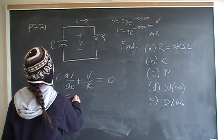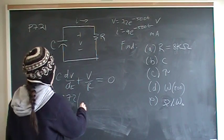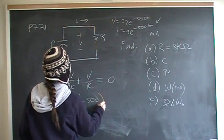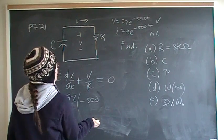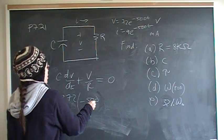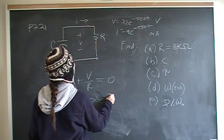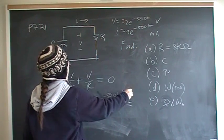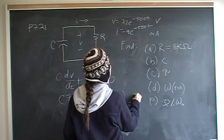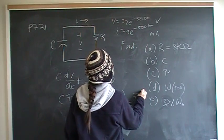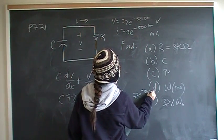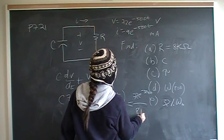dV/dt is 72 times negative 500, that's going to be negative 500t. I'm going to move this over there. V over R is 72e to the negative 500t, that's over 8K.